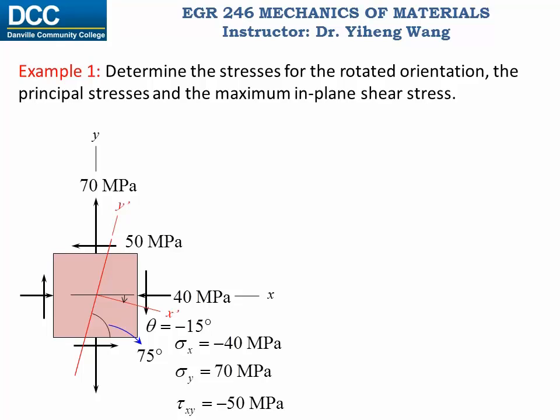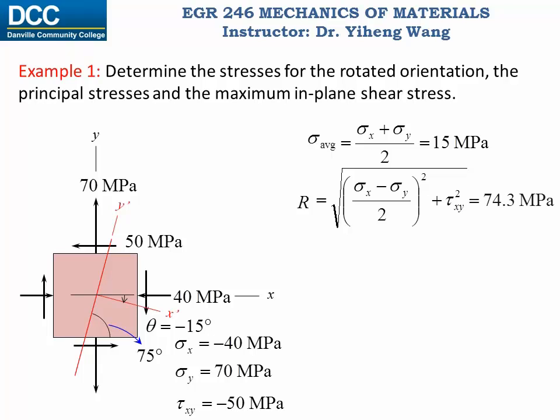Let's revisit this example problem. We need to determine the new state of stress associated with the new orientation as shown, and also determine the principal normal stresses as well as the maximum in-plane shear stress. This time we are going to solve this problem using Mohr's circle. To do that we need to first calculate the average normal stress, which equals to 15 MPa, as well as the radius of Mohr's circle, which equals to 74.3 MPa — which is the absolute value of the maximum in-plane shear stress.